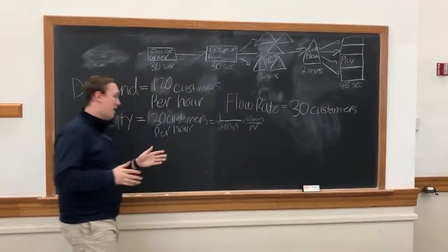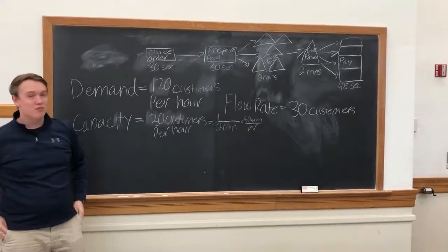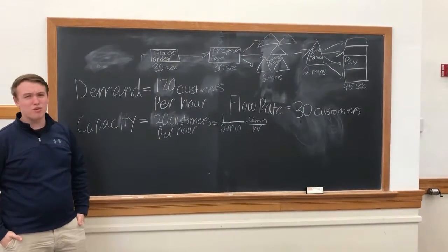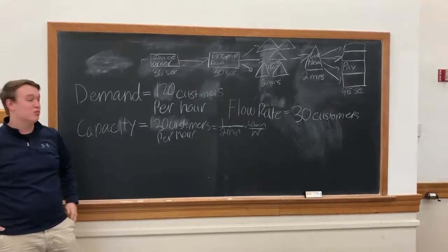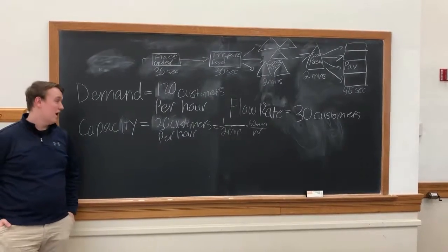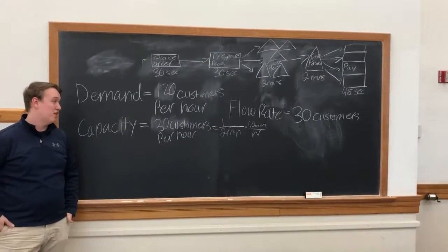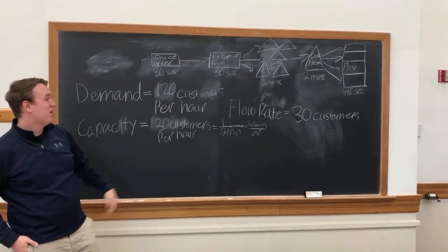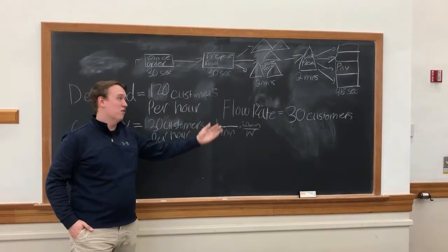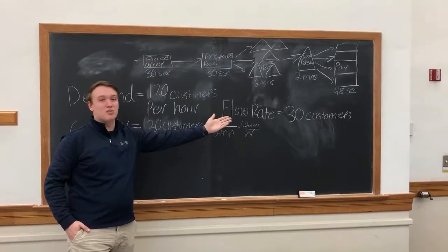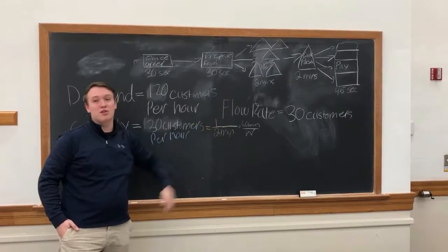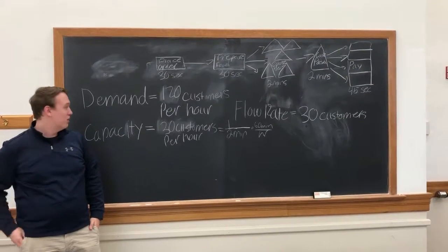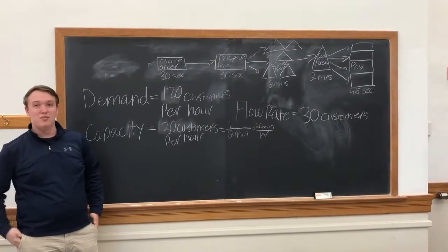There's an estimated demand for the River Room of about 120 customers per hour and a capacity of 30 customers per hour, leading to a flow rate of 30 customers per hour, as flow rate is the minimum of demand and capacity.